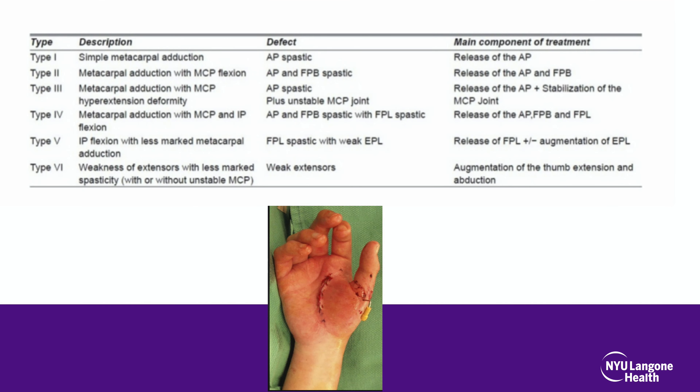Regarding the thumb-in-palm deformity, there are different types depending on what is adducted, and all levels of deformity must be addressed. The MCP joint must also be assessed for stability, as this must be addressed at the time of surgery.